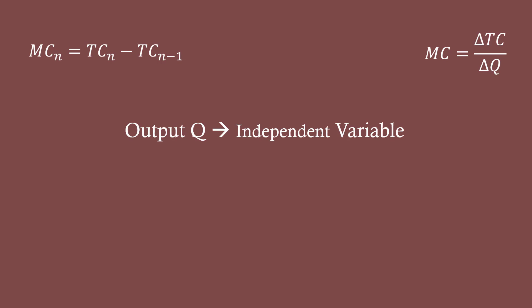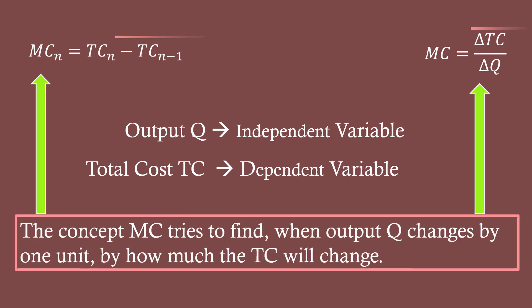Output Q is an independent variable. Total cost TC is a dependent variable. The concept marginal cost tries to find when output Q changes by 1 unit by how much the total cost will change.